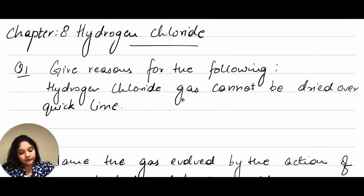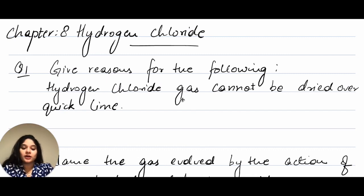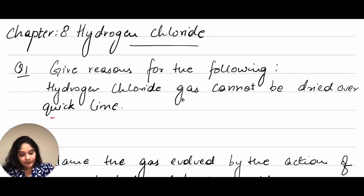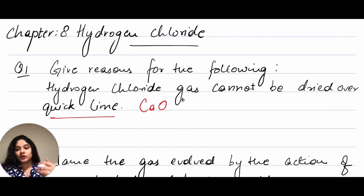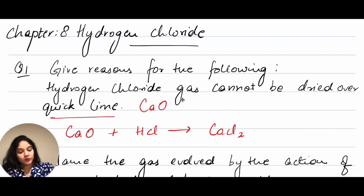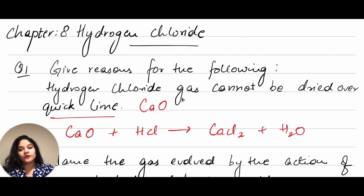The first question is: give reason for the following — hydrogen chloride gas cannot be dried over quicklime. As we know, quicklime is a good drying agent, but we can't dry hydrogen chloride gas over it because they both end up reacting with each other. Quicklime is calcium oxide, CaO, and CaO reacting with HCl gives us CaCl₂ — calcium chloride — plus water. So since the reaction happens, it cannot be used to dry hydrogen chloride gas.